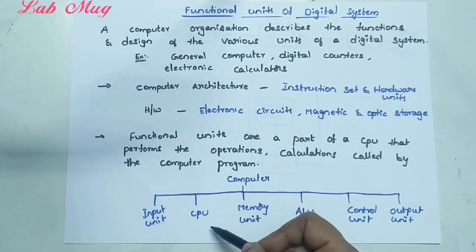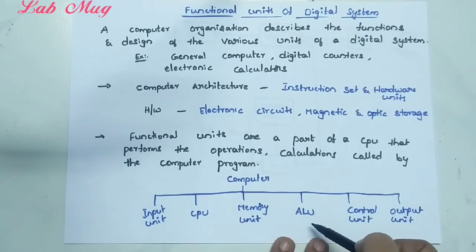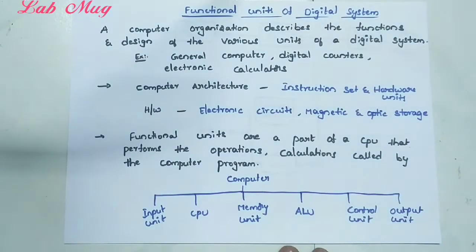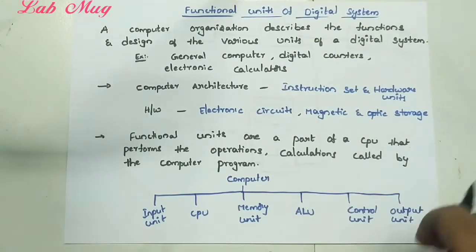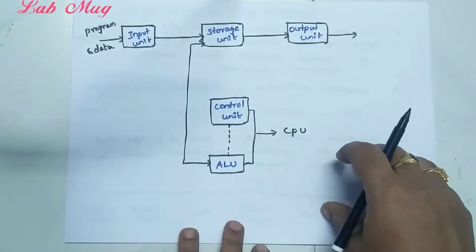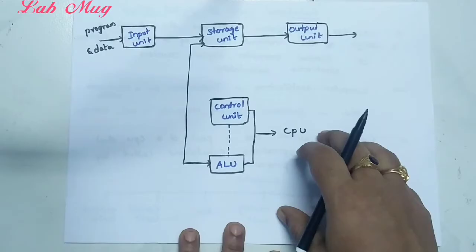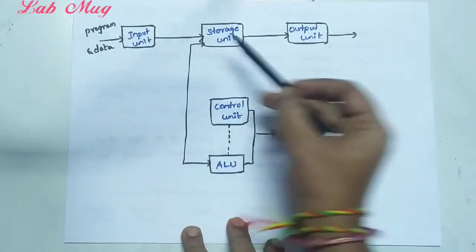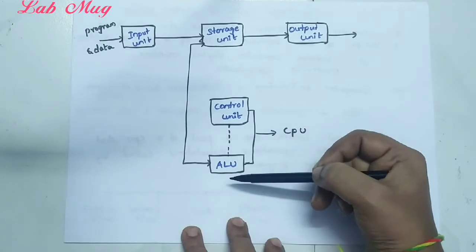The units of a computer are: input unit, central processing unit, memory unit, arithmetic and logical unit, control unit, and output unit. This is the block diagram of a computer representing the functional units of a digital system. The partitions are: input unit, storage unit, output unit, control unit, and ALU.